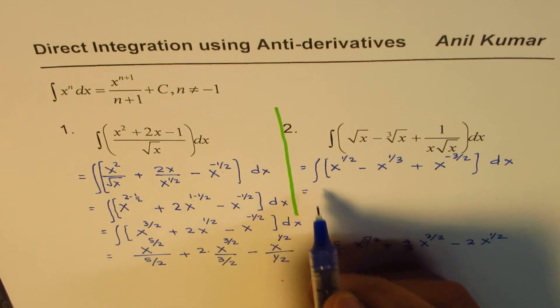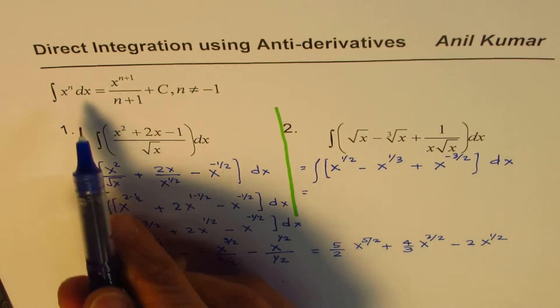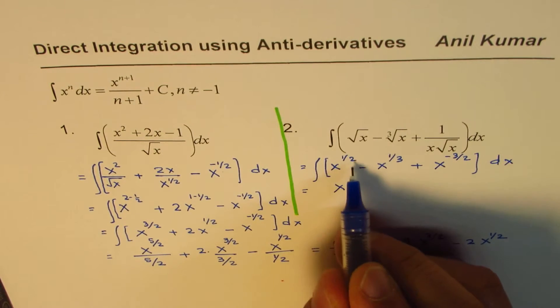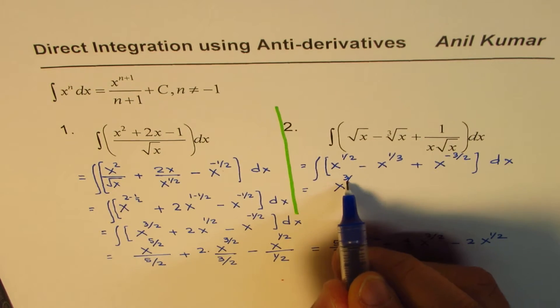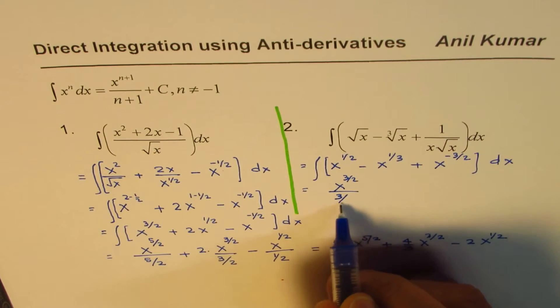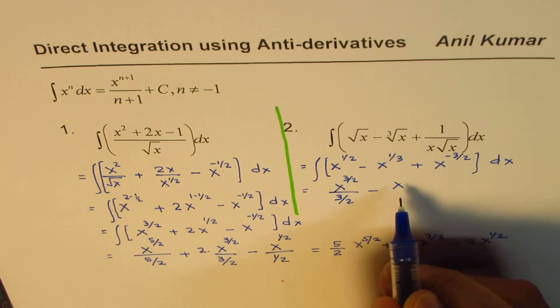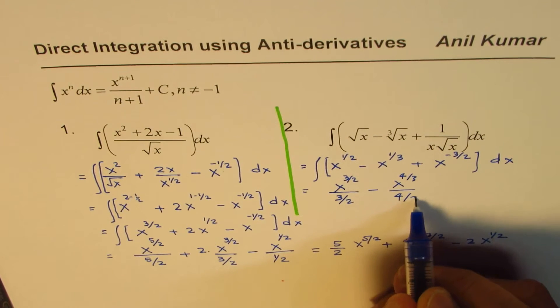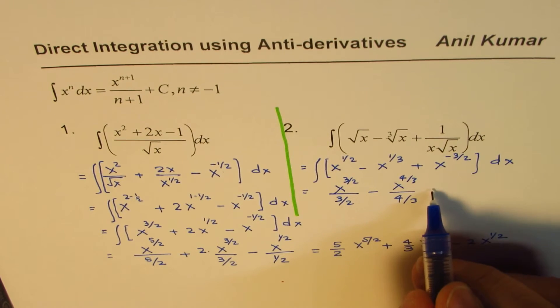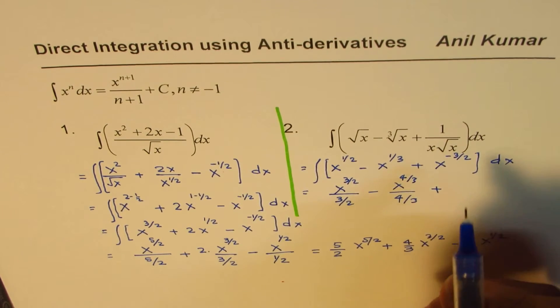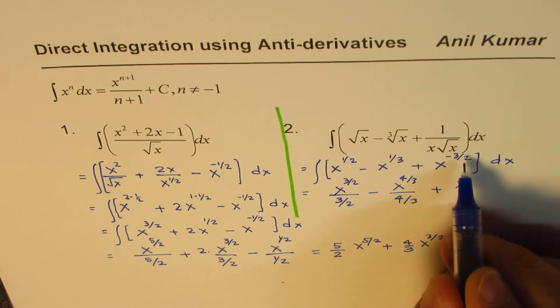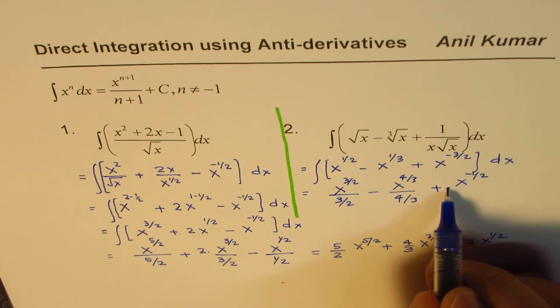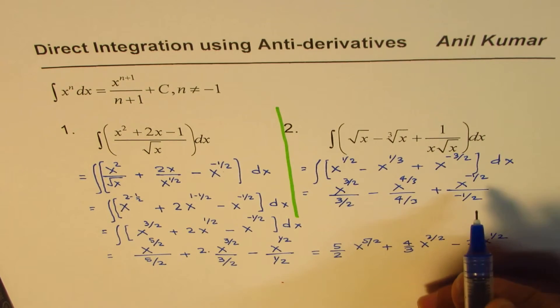And now we'll apply the formula directly. So we get x to the power of half plus 1, which is 3 by 2 over 3 by 2, minus x to the power of 4 over 3 over 4 over 3. And we'll do, let me write plus here first. x to the power of, when you add 1, you get minus half over minus half.